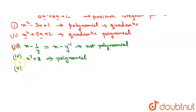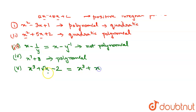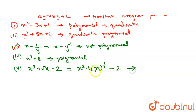The fifth question is x cubed plus root x minus 2. We can write root x as x to the power of 1/2, which is a fractional power. Since any algebraic expression having a fractional power is not a polynomial, this expression is not a polynomial.